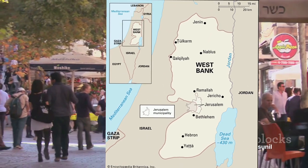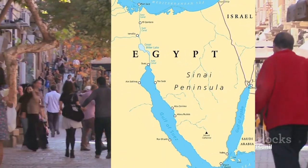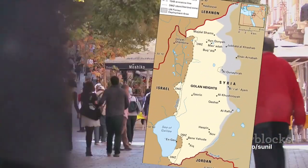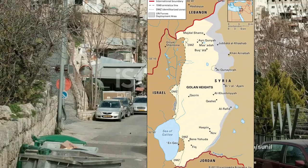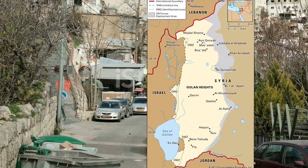The 1967 Six-Day War saw Israel capture the West Bank, Gaza Strip, Sinai Peninsula, and Golan Heights, further exacerbating the conflict.